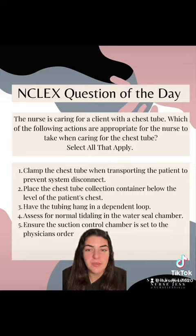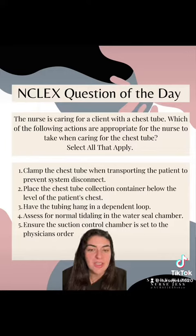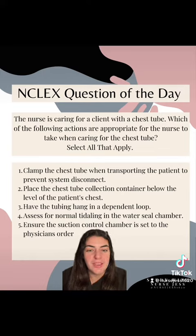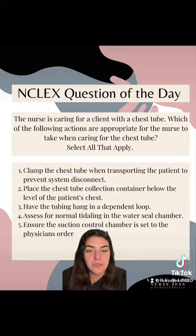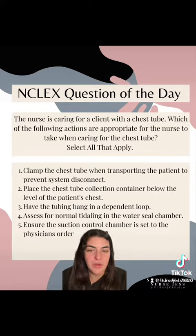Option 2: Place the chest tube collection container below the level of the patient's chest. Yes, this is true. Option 3: Have the tubing hang in a dependent loop. This is incorrect. Just like clamping and stripping, we do not do dependent loops — this will ultimately lead to a kink. So that is wrong.